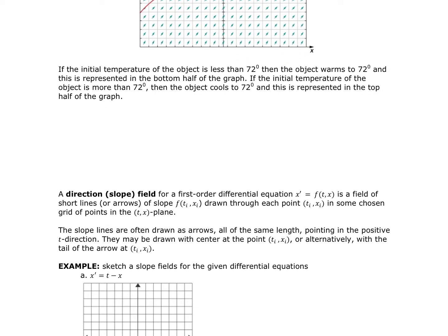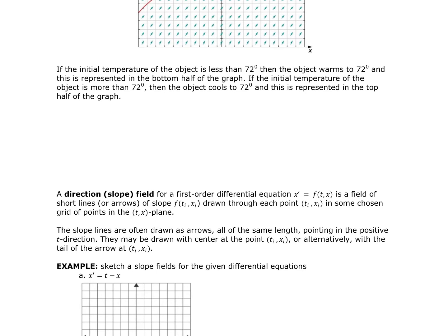A directional field or slope field for a first-order differential equation X prime equals F of T, X is a field of short lines or arrows where the slope F(T_i, X_i) are drawn through each point (T_i, X_i) on some chosen grid of points on the X-T plane. This is similar to the XY plane, except the independent variable is T and the dependent variable is X. The slopes of the lines are often drawn as arrows of the same length, pointing in the positive T direction.